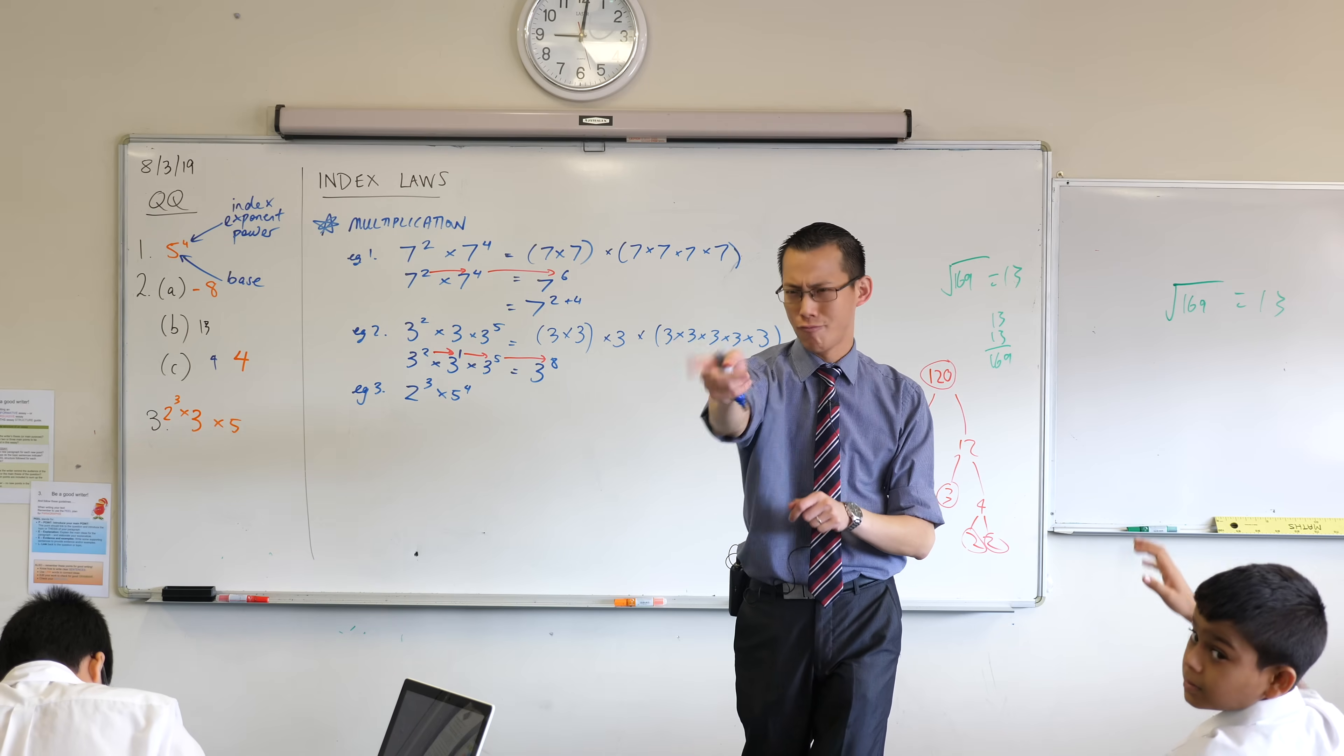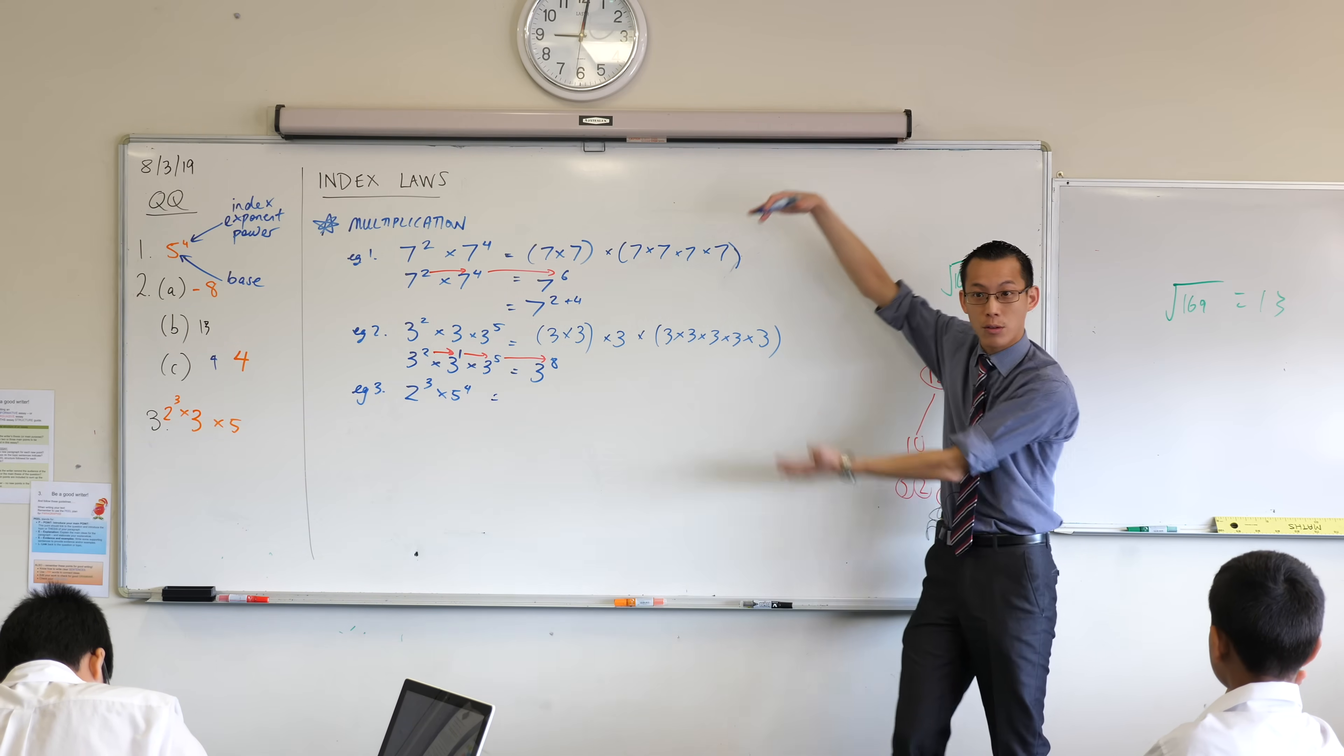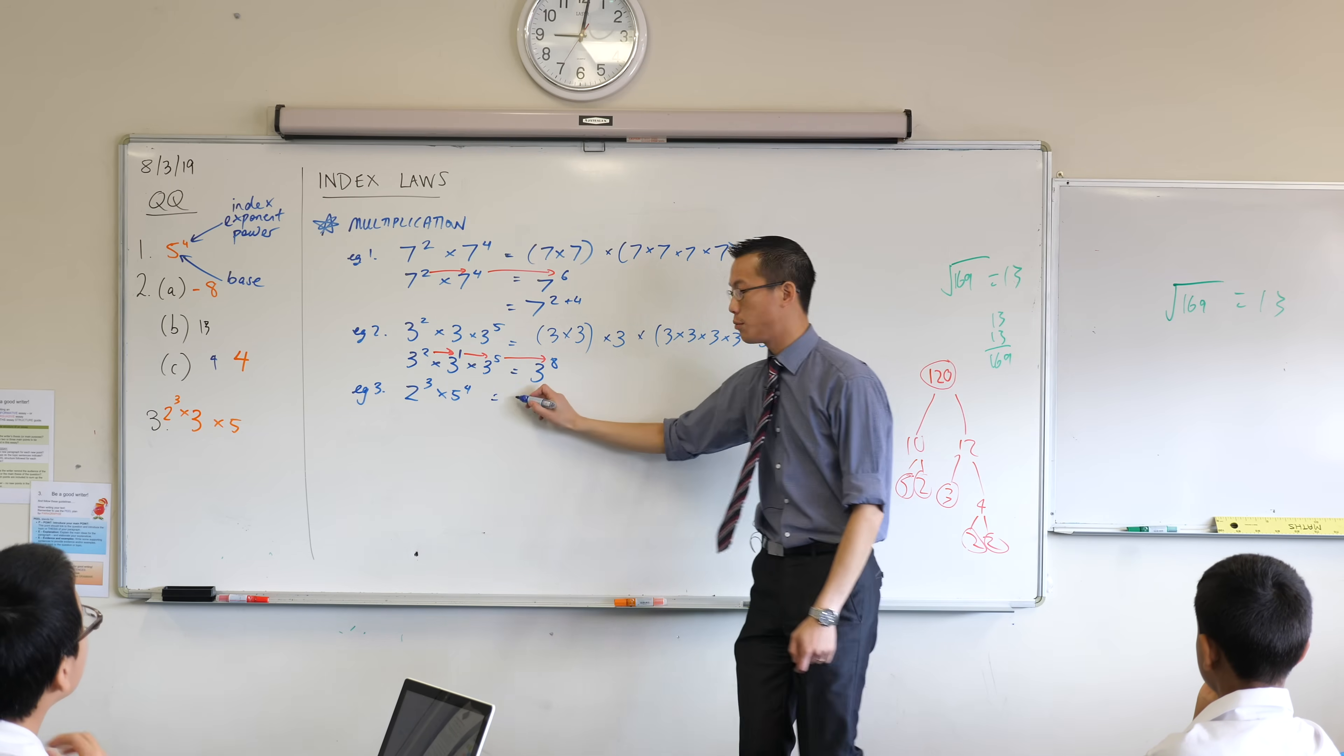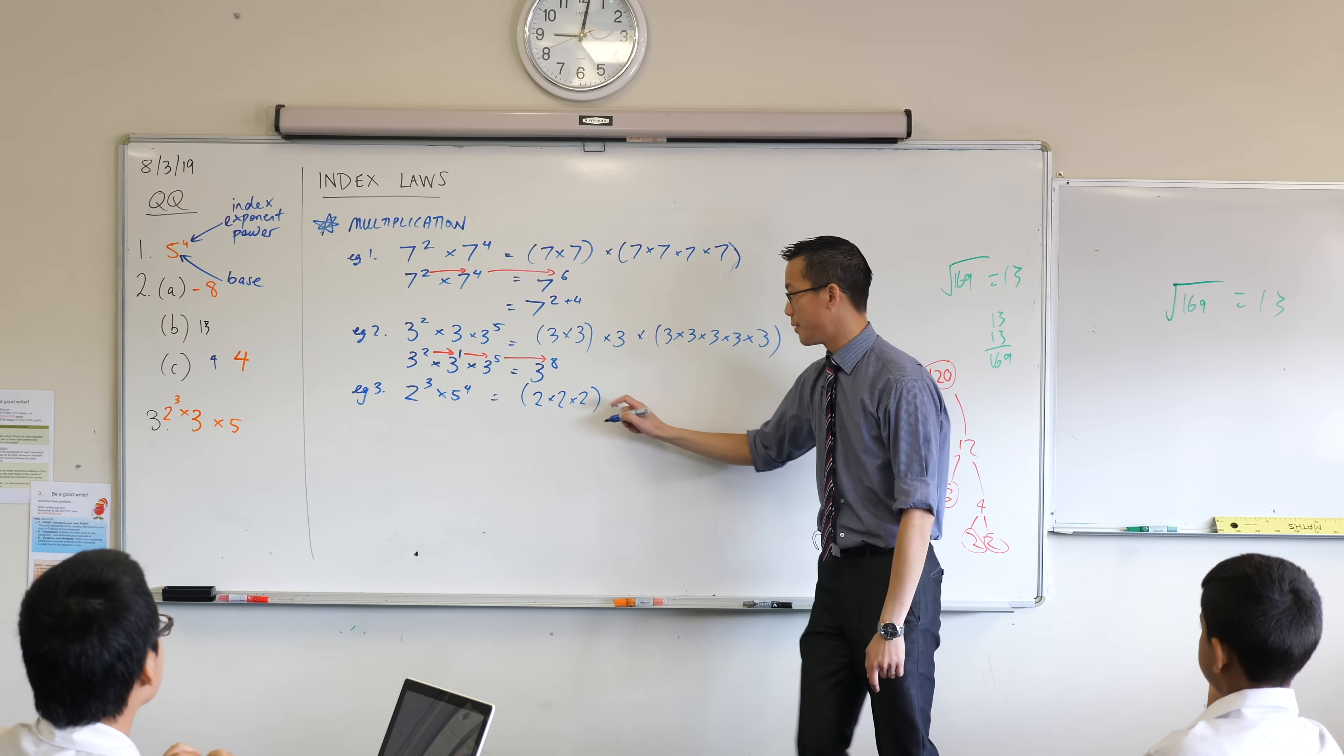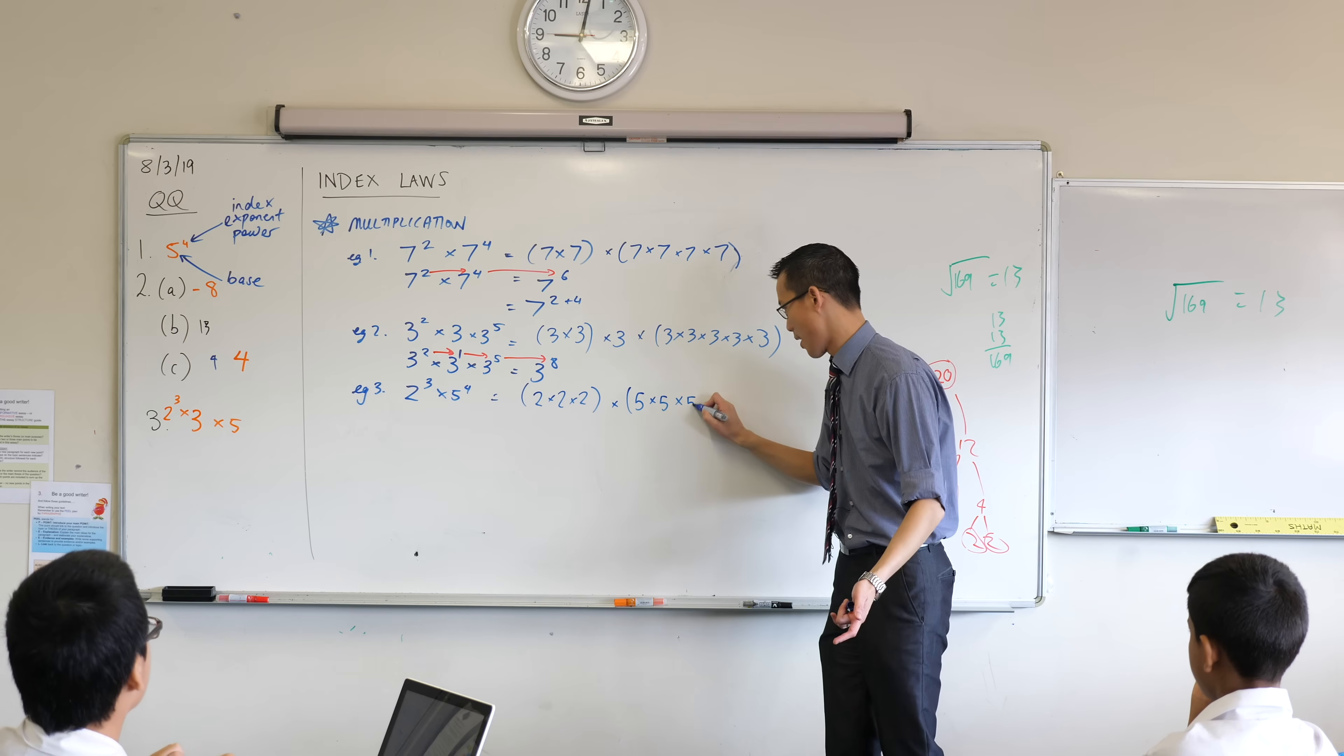Okay now before I jump to your answer I'm going to get you to suggest in a second, but for the sake of the pattern that we've just established, what does this actually mean? Well 2 cubed is 2 times 2 times 2 okay and then you've got this guy 5 times 5 times 5 times 5.